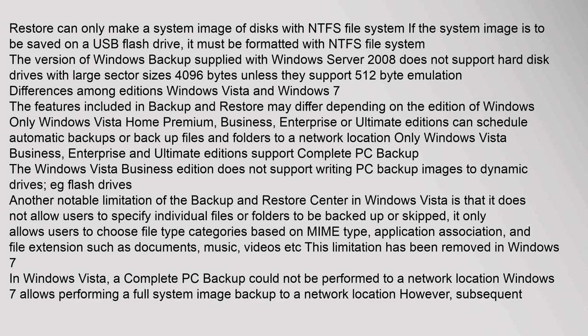Differences among editions — Windows Vista and Windows 7: The features included in Backup and Restore may differ depending on the edition of Windows. Only Windows Vista Home Premium, Business, Enterprise, or Ultimate editions can schedule automatic backups or backup files and folders to a network location. Only Windows Vista Business, Enterprise, and Ultimate editions support Complete PC Backup. The Windows Vista Business edition does not support writing PC backup images to dynamic drives, e.g. flash drives. Another notable limitation in Windows Vista is that it does not allow users to specify individual files or folders to be backed up or skipped; it only allows users to choose file type categories based on MIME type, application association, and file extension, such as documents, music, videos, etc.